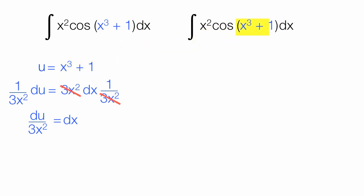So I can replace x-cubed plus 1 with u, and I'll replace dx with du over 3x-squared. Notice the x-squareds cancel.